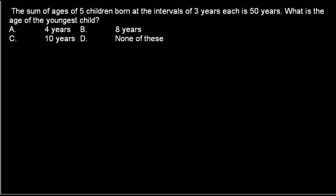Okay guys, we're back and in this video we'll be talking about another problem. It will be a very similar problem but slightly changed. The sum of ages of 5 children born at intervals of 3 years each is 50 years. What is the age of the youngest child?